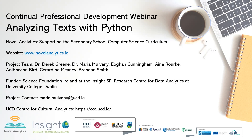NovelAnalytics.ie hosts clean data classroom worksheets, slide presentations and assessments relating to three novels: Jane Austen's Pride and Prejudice, Mary Shelley's Frankenstein and Bram Stoker's Dracula. This project has been generously funded by Science Foundation Ireland at the Insight SFI Research Centre for Data Analytics at UCD.